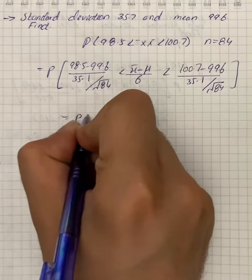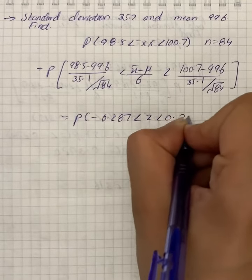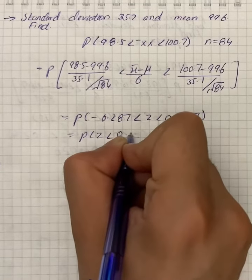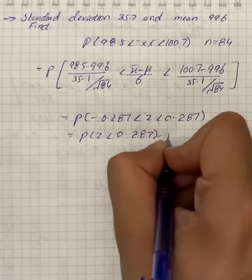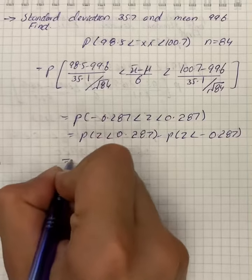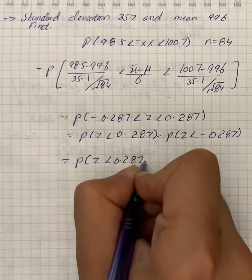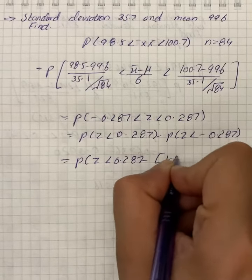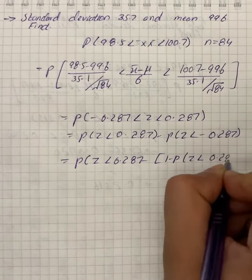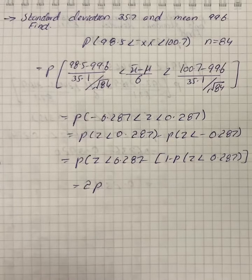So here we have P of minus 0.287 less than z less than 0.287. So we have P of z less than 0.287 minus P of z less than minus 0.287. We can write P of z less than 0.287 minus 1 minus P of z less than 0.287.